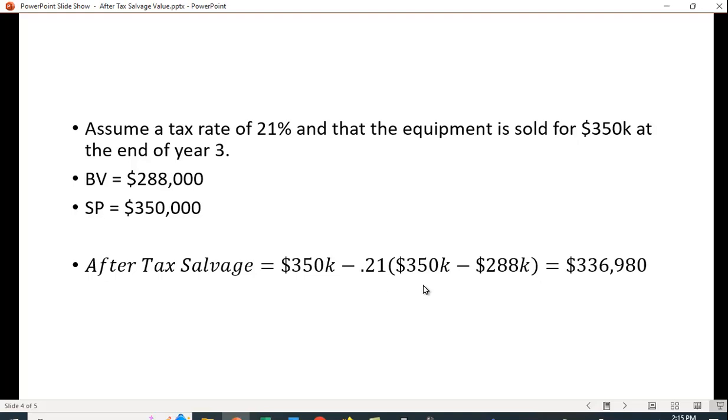You're going to pay a tax because you have a capital gain here. You have a capital gain of $62,000, right? $350,000 minus $288,000 and it's going to work out to $336,980.